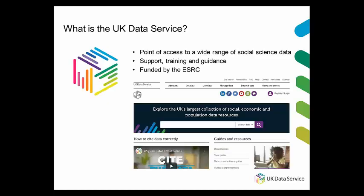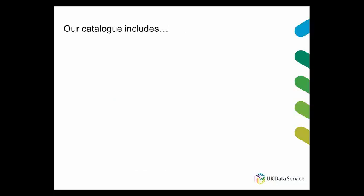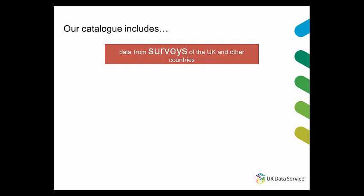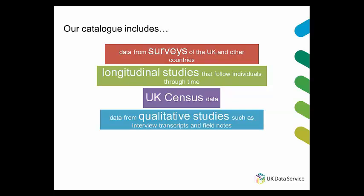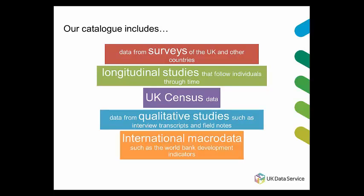So what is the UK Data Service? It's a research resource that allows people to access a wide range of social science data. We also provide training and support through activities such as webinars, and we're funded by the ESRC, which is the Economic and Social Research Council. The wide range of data in our catalogue includes data from surveys of the UK and other countries, longitudinal studies that follow individuals through time, data from the UK census, data from qualitative studies such as interview transcripts and field notes, and international macro data such as the World Bank indicators.